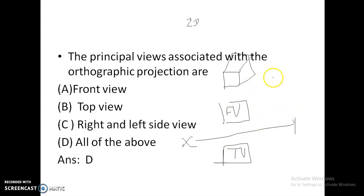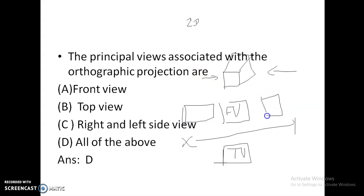For side views, you view from the right-hand side to draw the left side view, and you view from the left side to draw the right-hand side view. So we have: front view, top view, right side view, and left side view — these are all the principal views associated with orthographic projection.